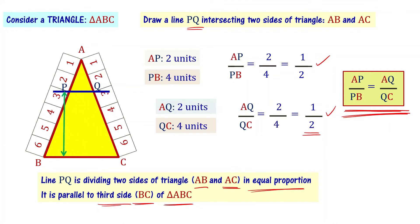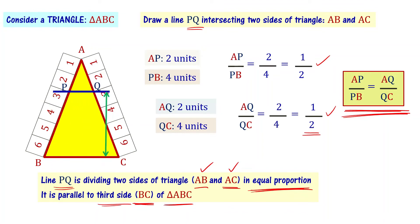In triangle ABC, line PQ divides two sides AB and AC in equal proportion. That line PQ is parallel to BC, the third side of the triangle. This is the Converse of Basic Proportionality Theorem.